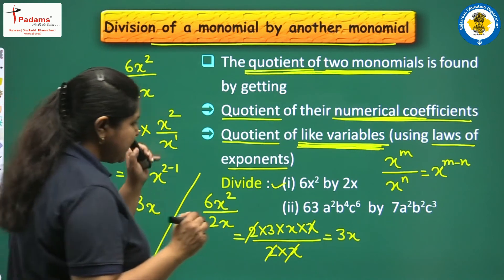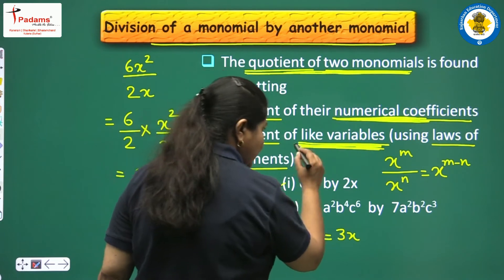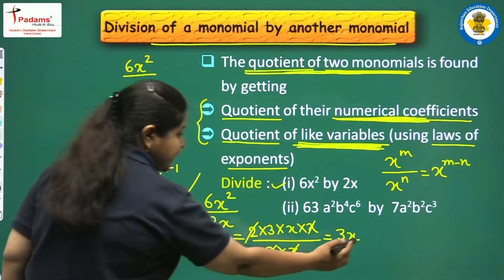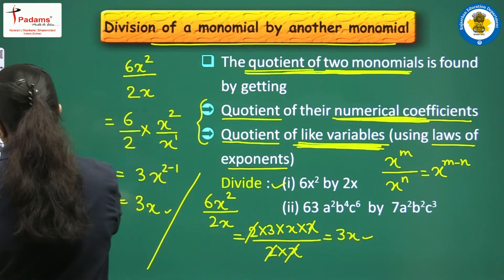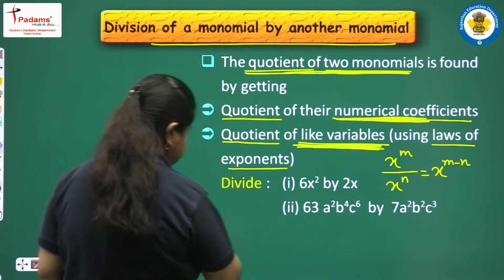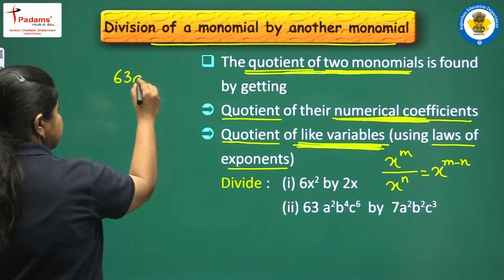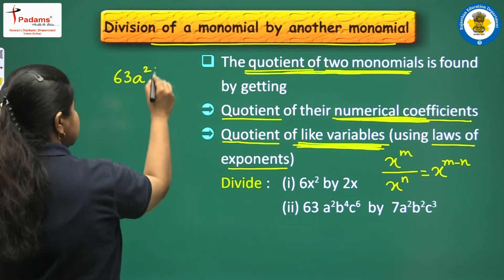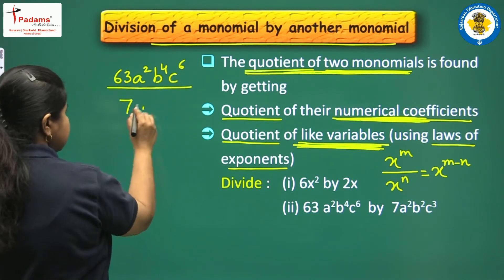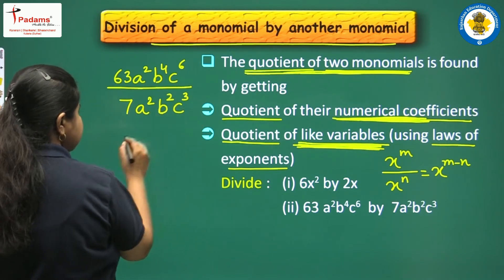We take one more example: 63a²b⁴c⁶ divided by 7a²b²c³. First divide the numerical coefficients: 63 upon 7. Then divide the like variables — a with a, b with b, c with c: a² upon a², then b⁴ upon b², and c⁶ upon c³. We have paired the like variables into groups.